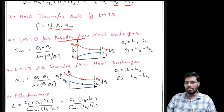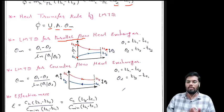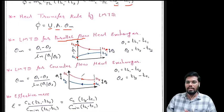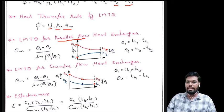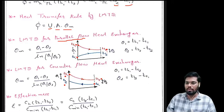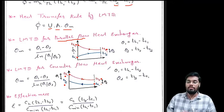We can see from the figure that the hot fluid flows from left to right and the cold fluid flows from right to left. The inlet of the cold fluid is TC1 and the inlet of the hot fluid is TH1. So for counter flow configuration, θ1 = TH1 - TC2 and θ2 = TH2 - TC1. This is the key difference between parallel flow and counter flow to consider when solving numericals.